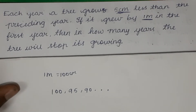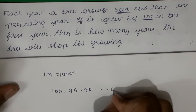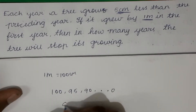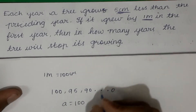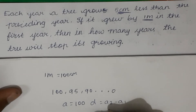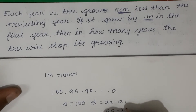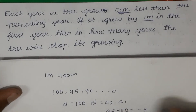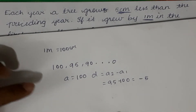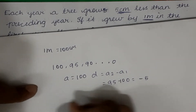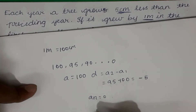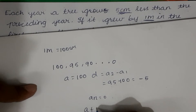They are asking when the tree will stop its growth. For the tree to stop its growth, the last term should be zero. So here, a is equal to 100 and d = a2 minus a1 = 95 minus 100, which is equal to minus 5. Now we can write an is equal to zero, since the last term is zero.